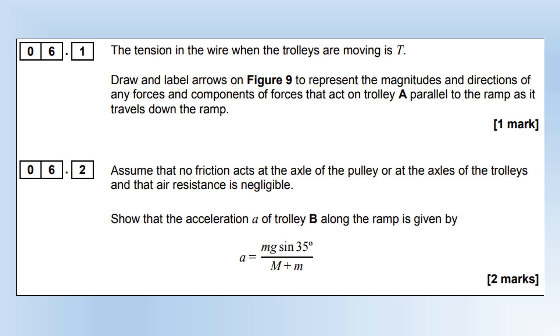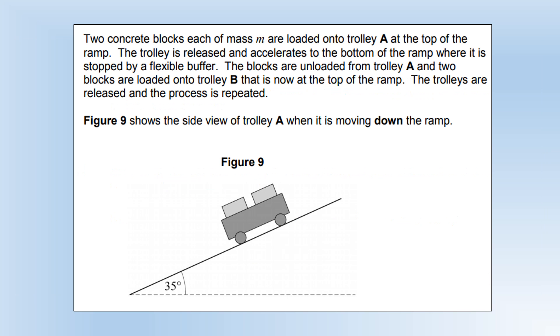The tension in the wire when the trolley is moving is T. Draw and label arrows on Figure 9 to represent the magnitudes and directions of any forces and components of forces that act on trolley A parallel to the ramp as it travels down. First, it's going to have its component of weight force parallel to the ramp, so it's got its own mass plus the mass of the two blocks times sin(35), and it's going to have the tension force acting upward parallel to the slope.